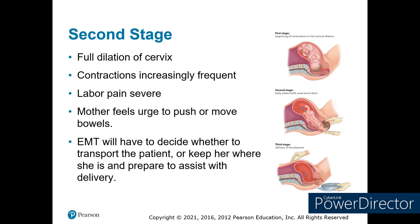We need to make quick decisions: do we load and go, or stay and play? We'll get a thorough history — is this the first pregnancy, how far apart are contractions, any known complications? Our goal is to do the delivery in the safest place, either at home or at the hospital. We prefer not to deliver in the ambulance if at all possible.